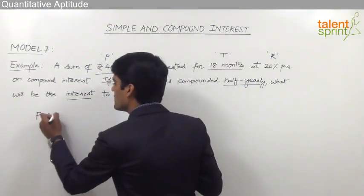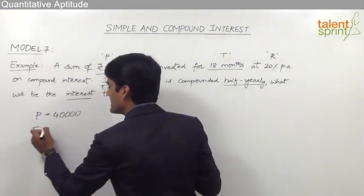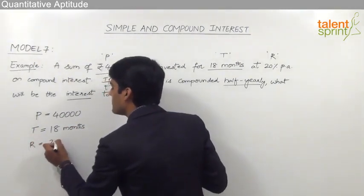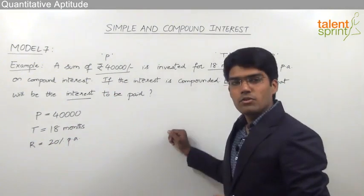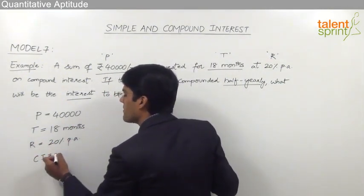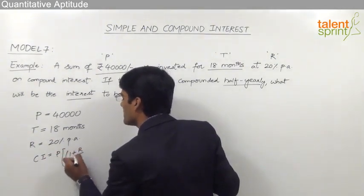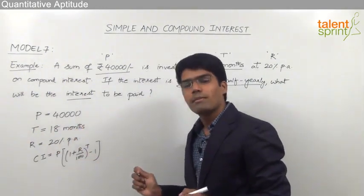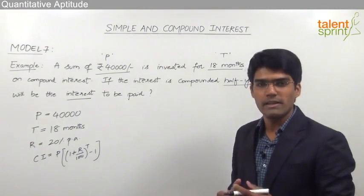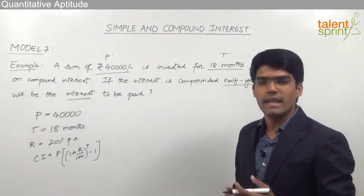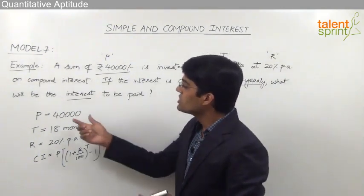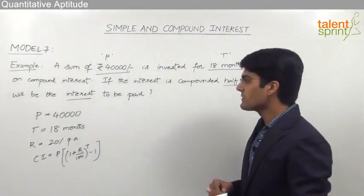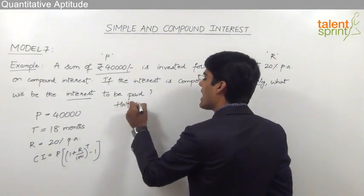The principal is 40,000, time period is 18 months, and the rate of interest is 20% per annum. We need to find the total compound interest. The formula is CI = P(1 + R/100)^T − 1. For half yearly compounding, the principal remains 40,000. Since the compounding is half yearly, we need to find how many half years are in 18 months — that is 3 half years, so T = 3 periods where each period equals 6 months. The rate is 10% per period.